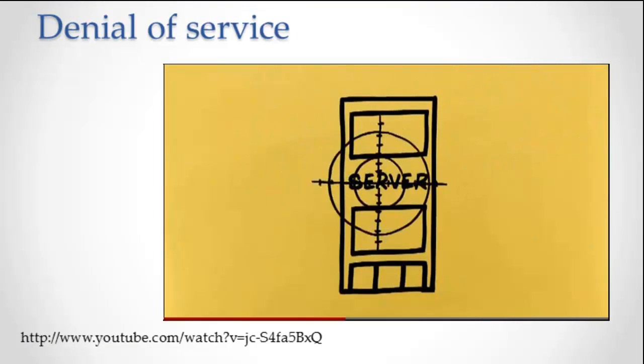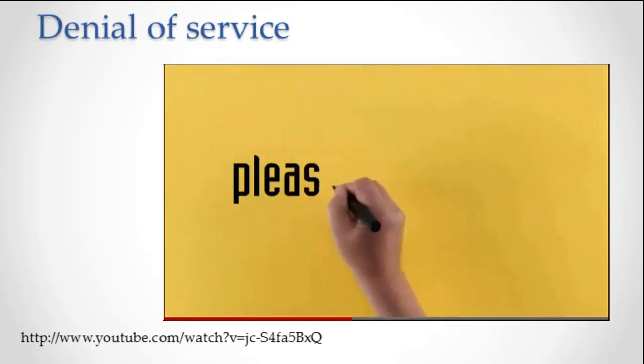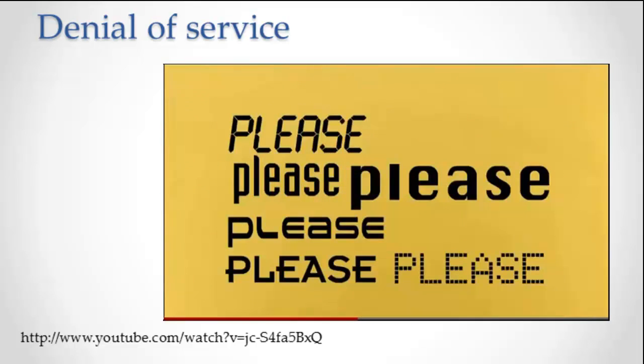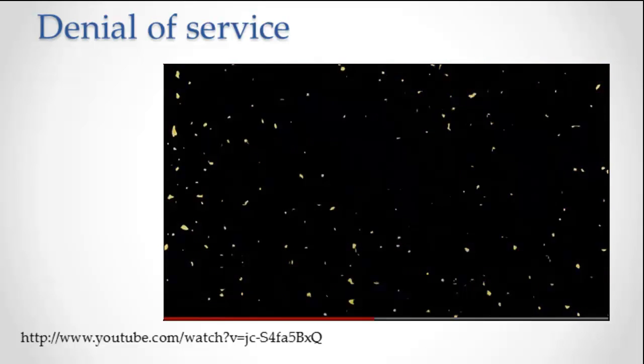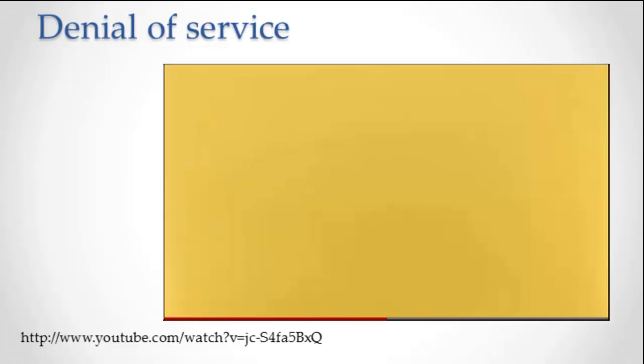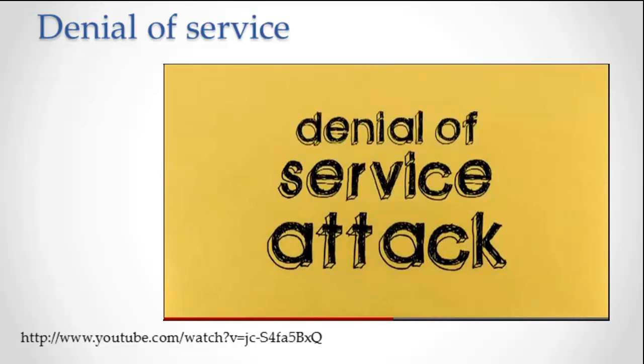They choose a server to attack and start making requests. Lots of requests. So many requests that the server can't keep up and eventually it stops working altogether. Then no one can see anything that's stored on it. It's called a denial of service attack.